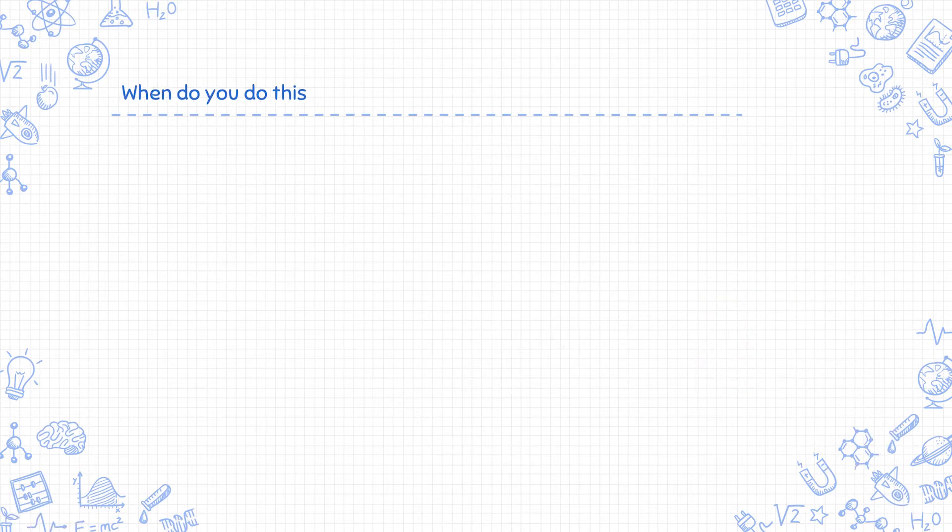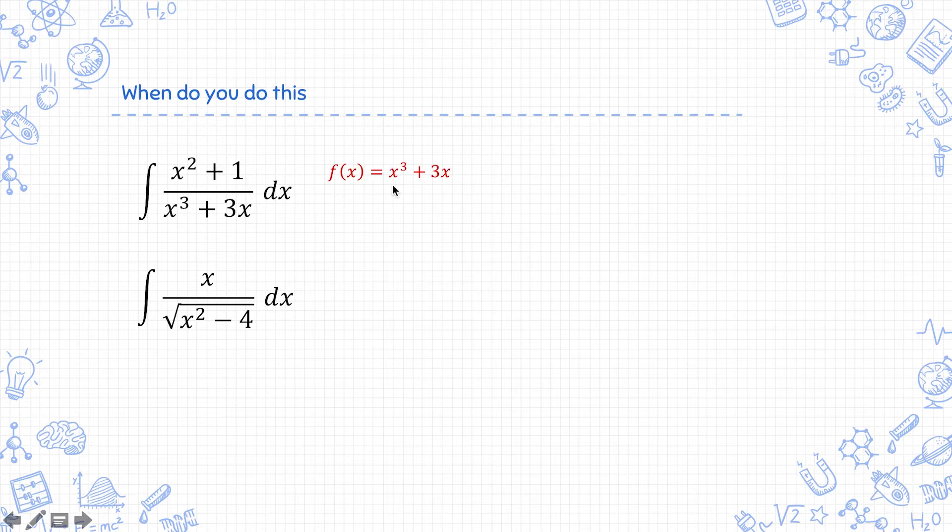When do you do this? If you have an expression containing two polynomials where the difference in their powers is 1, for example, here's an x squared with an x cubed, here's an x with an x squared, you can pull out an fx and f'x somewhere because differentiating a polynomial reduces its power by 1. For the first expression, taking fx equals x cubed plus 3x, that makes f'x equals 3x squared plus 3. So you can see that this expression is in the form f'x over fx.